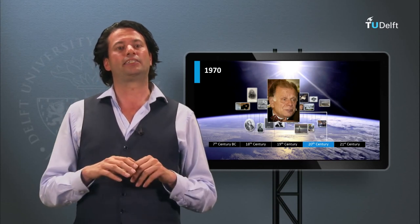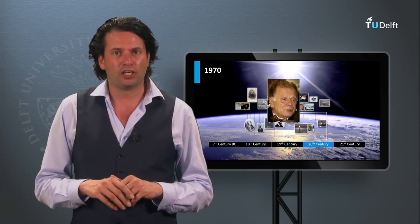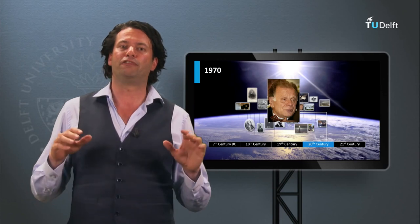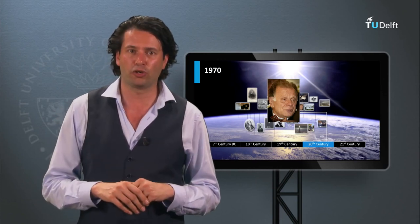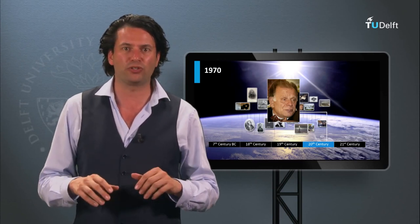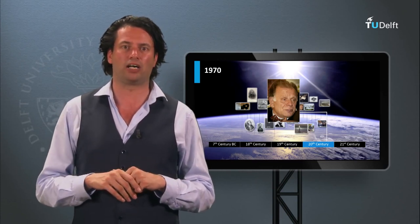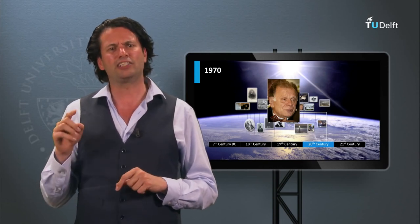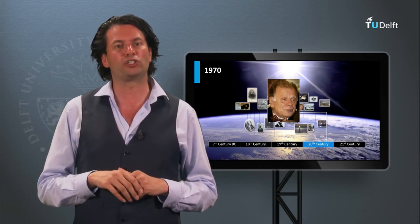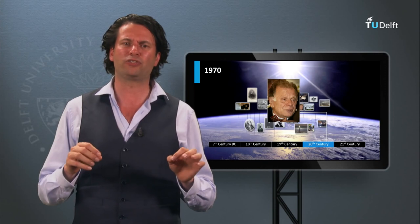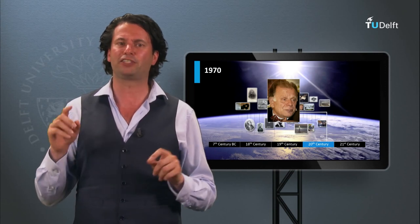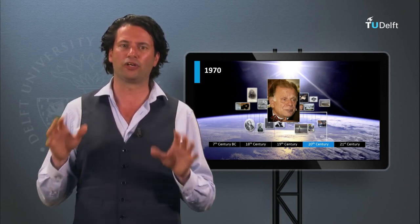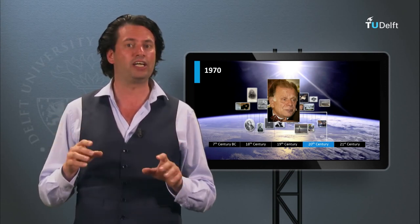In 1970 in the Soviet Union, Zhores Alferov developed the high-efficiency solar cell based on gallium arsenide heterojunction solar cells. This is the first demonstrator of a solar cell based on III-V semiconductor materials. This technology will be discussed in week 5.